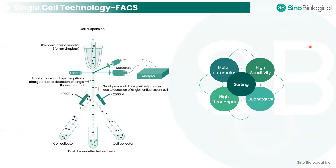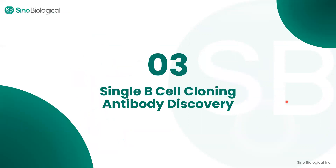For Sinobiological, we chose FACS to isolate single cells, which is then followed by antibody generation. The obvious reason we chose FACS is that the equipment is easily available and accessible. Most importantly, FACS is a high-throughput technology that separates cells according to the expression of target molecules, and it supports excellent purity of over 98%.